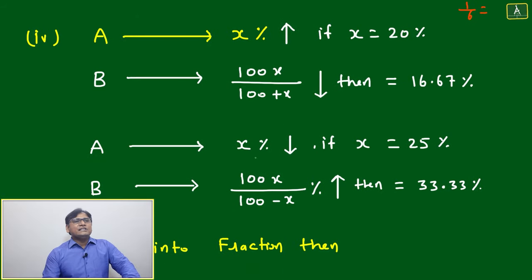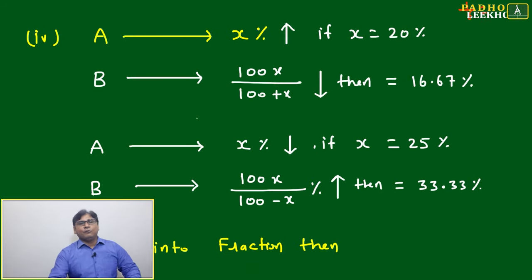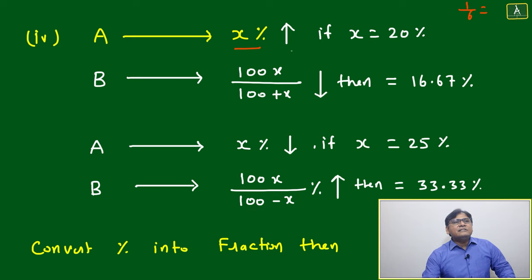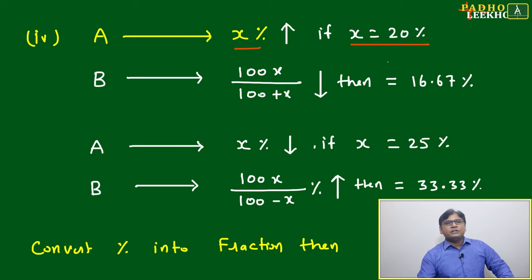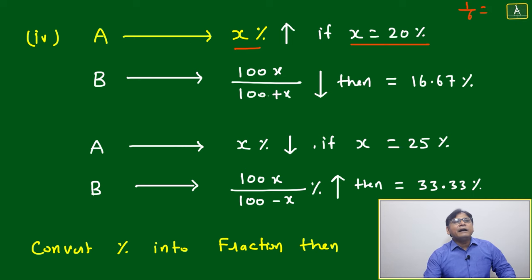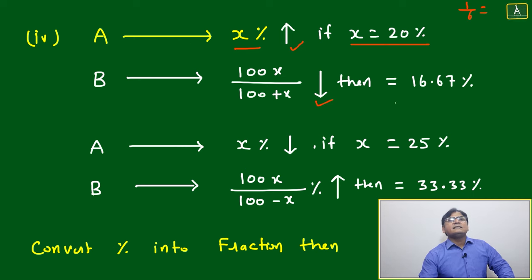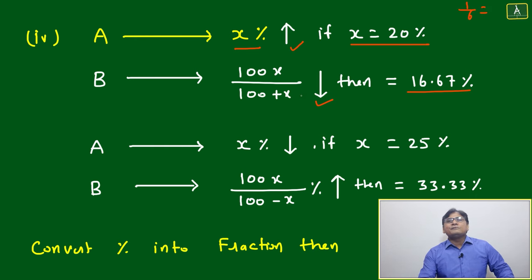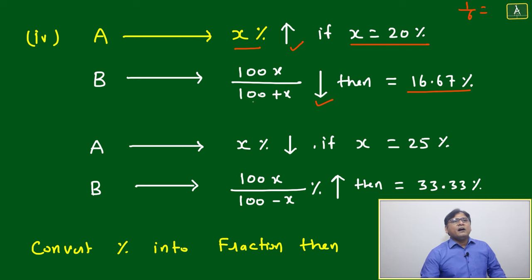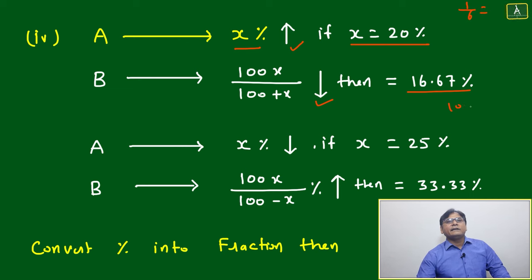Now directly we'll look at this format which is more helpful. If a is increased by x percent — suppose x equals 20 percent — then b will decrease by 100x divided by (100 plus x). You just put x equal to 20: 100 into 20 divided by 100 plus 20, which is 120.